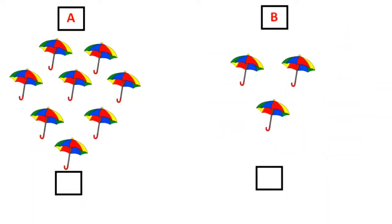Let's move on to the next example. Here we can see 2 sets of umbrellas. Let's count how many are there in set A: 1, 2, 3, 4, 5, 6, 7 and 8. Let's count how many are there in set B: 1, 2 and 3.